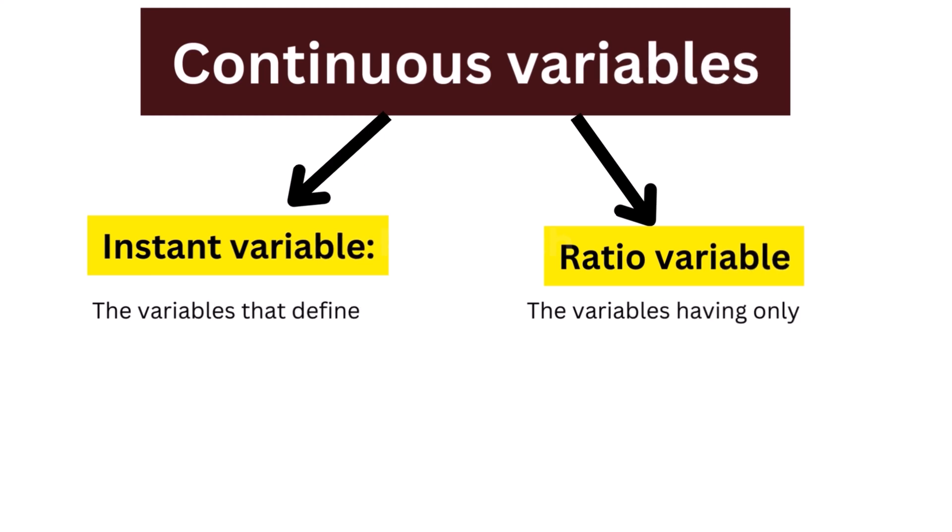One, interval variable. The variables that define the level or distance between each category which is equal and static are known as interval variables.